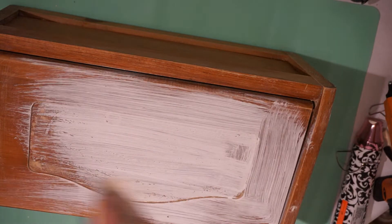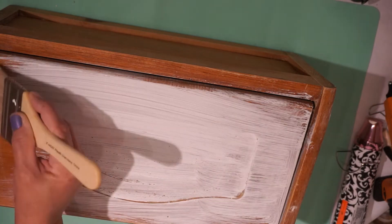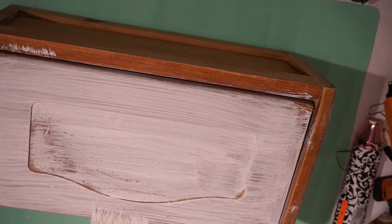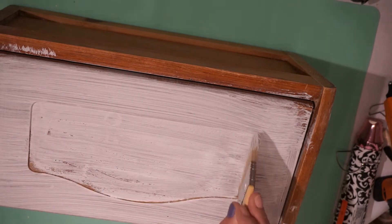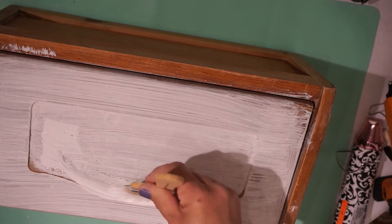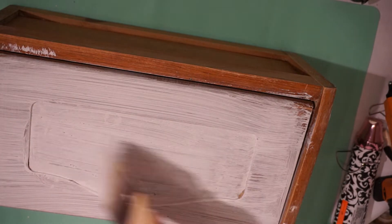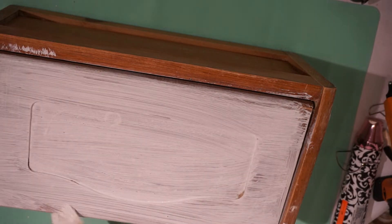So this is the primer I'm using, just white, plain white. And then I'm going to use this beautiful color called Bohemian Blue by DIY Paint Company, and that is what I'll be painting my bread box with. And then I will catch up with you.